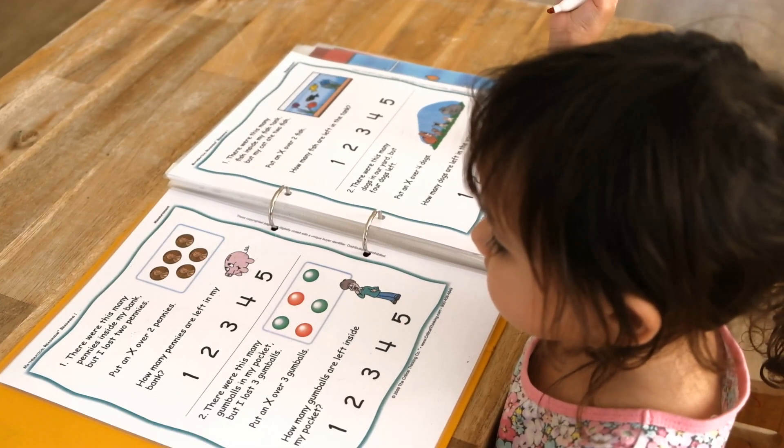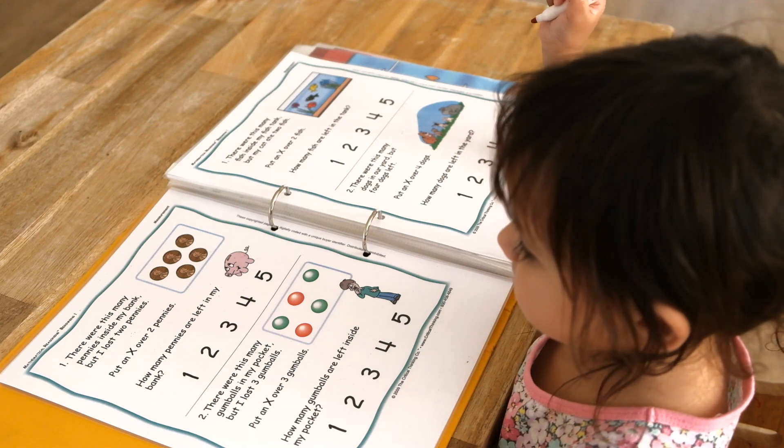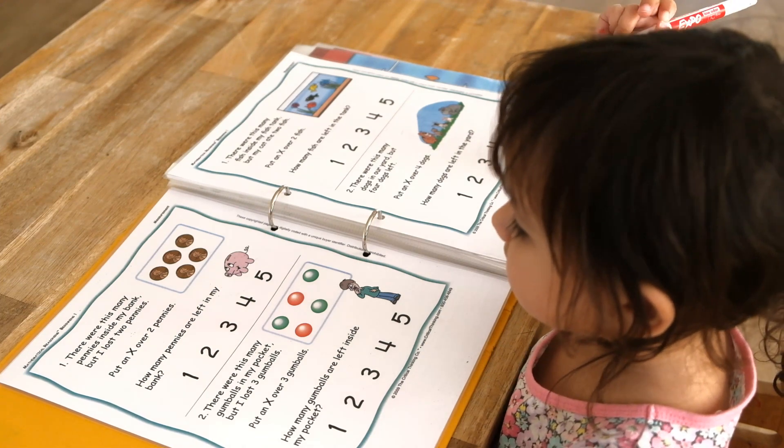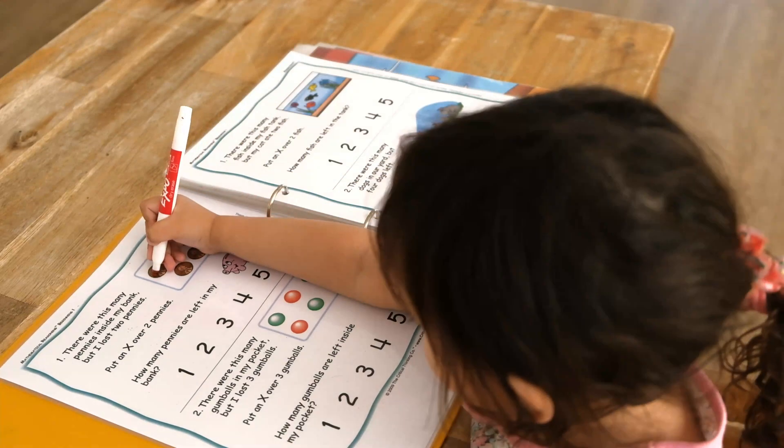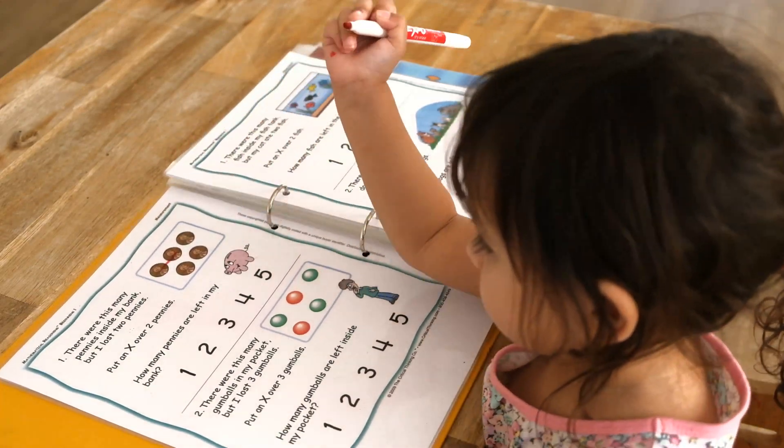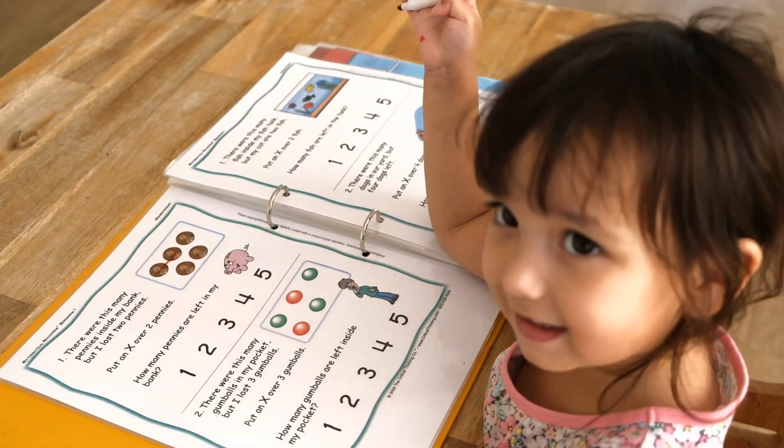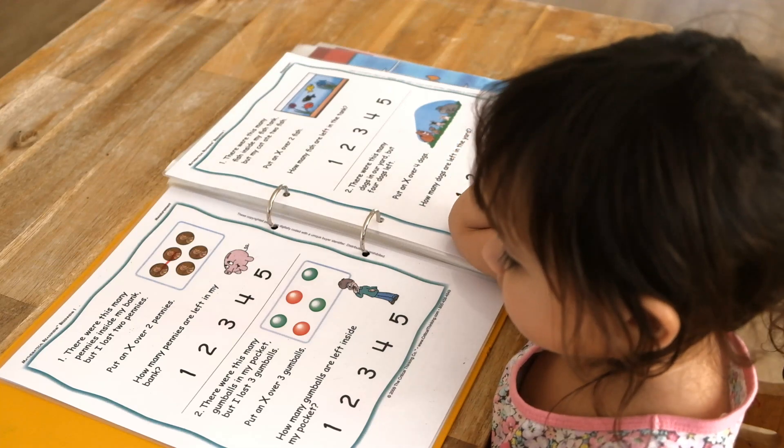There were this many pennies inside the bank, but I lost two pennies. Can you cross out two pennies? How many pennies are left? That's right. Can you circle number three?